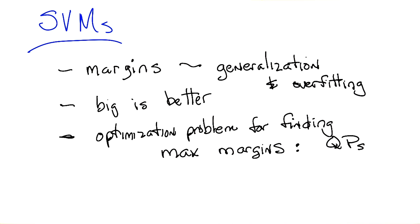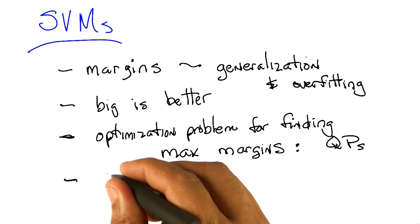And it was the dual of the quadratic program that showed us what the support vectors were. The support vectors were the points from the input data that were necessary for defining that maximum margin separator. So we actually figured out what support vectors were.